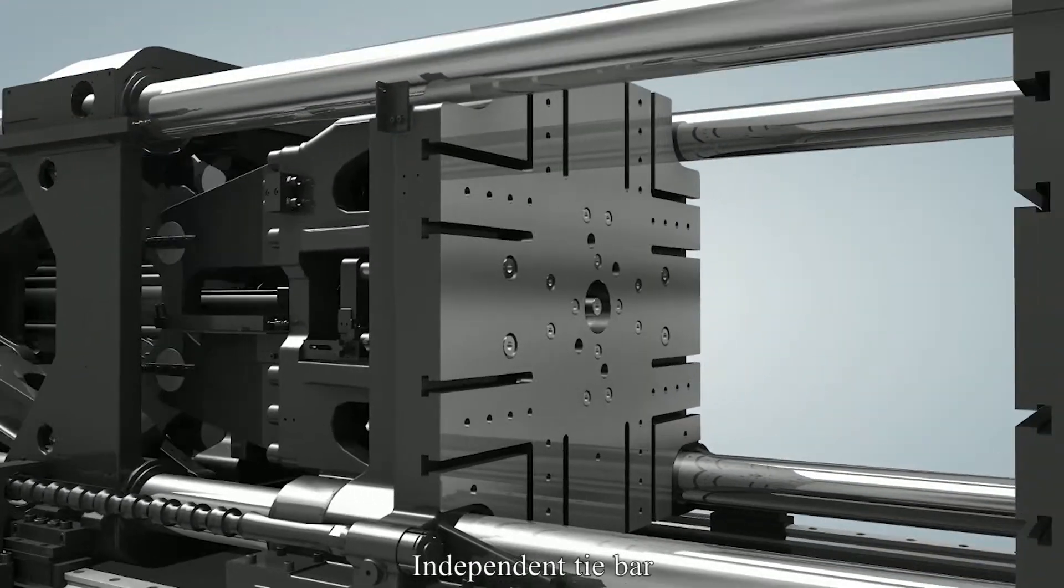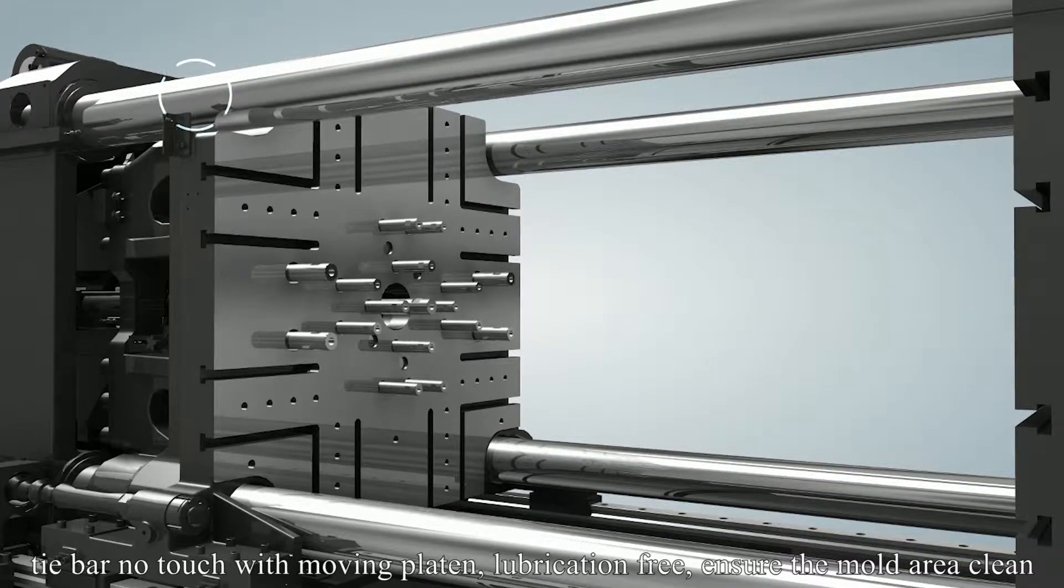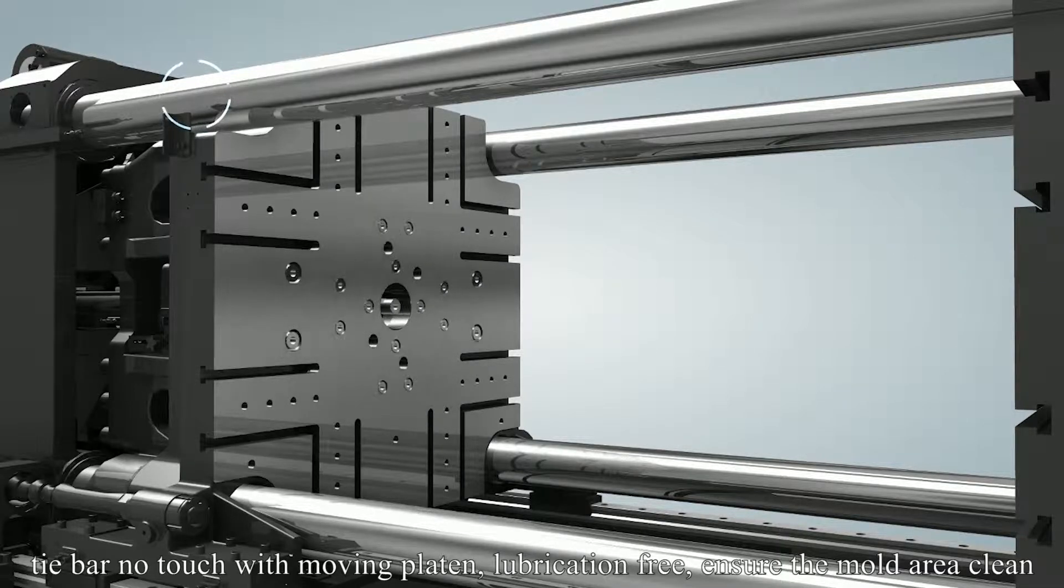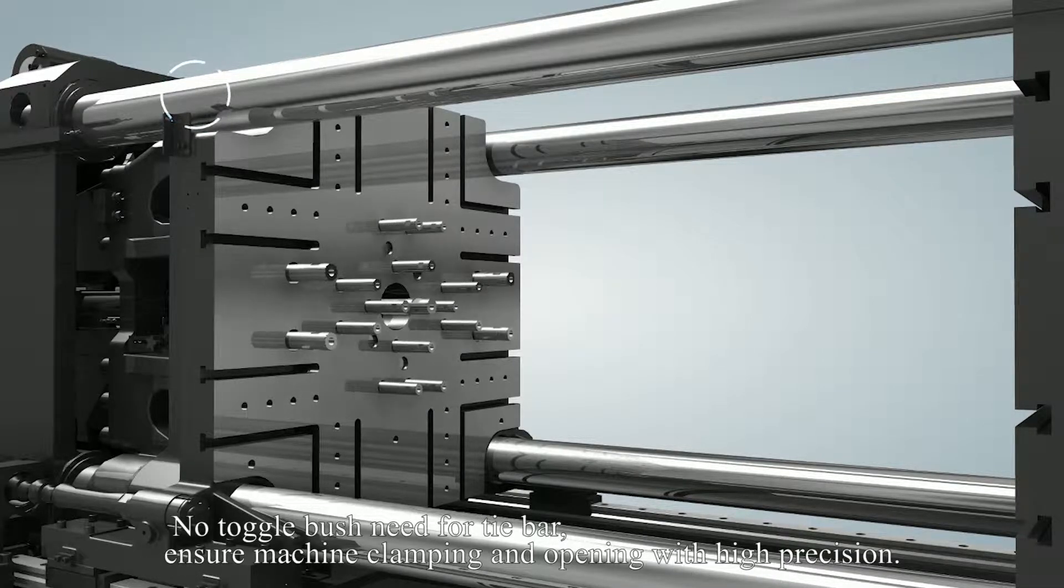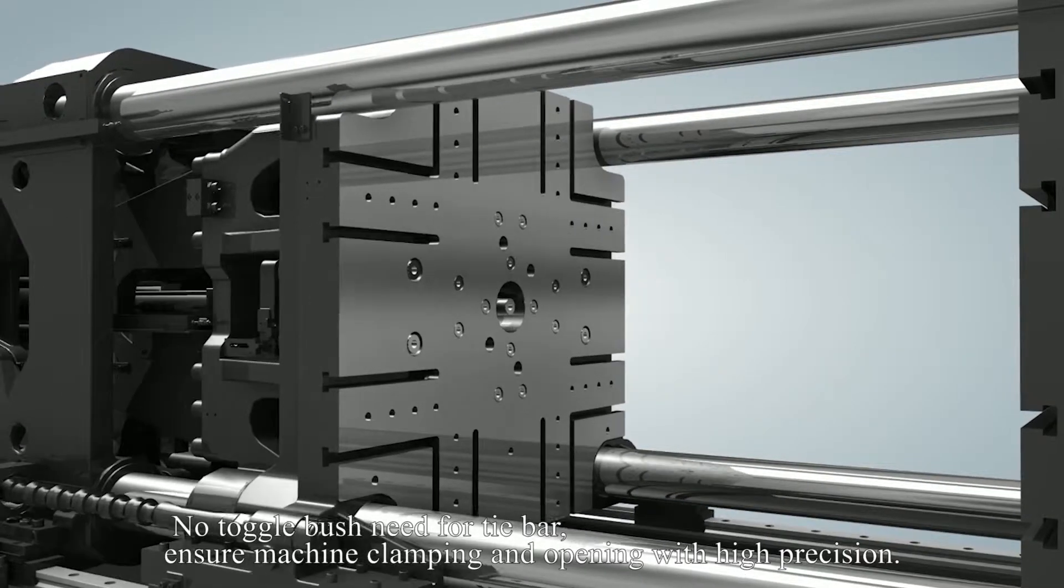Independent tie bar with no touch with moving platen. Lubrication free ensures the mold area clean. No toggle bush needed for tie bar. Ensures machine clamping and opening with high precision.